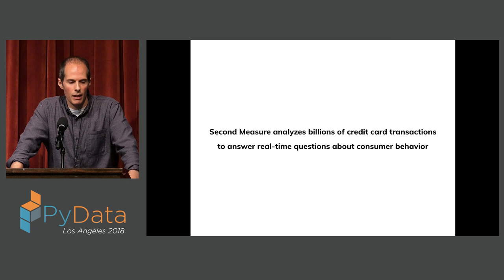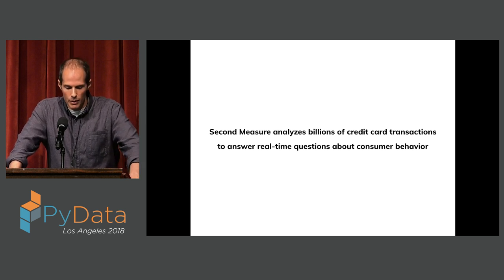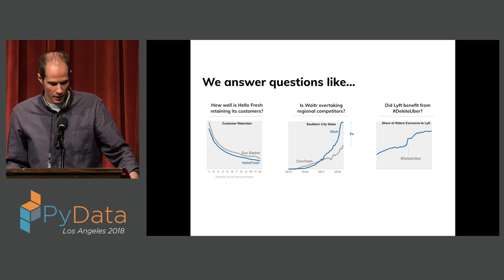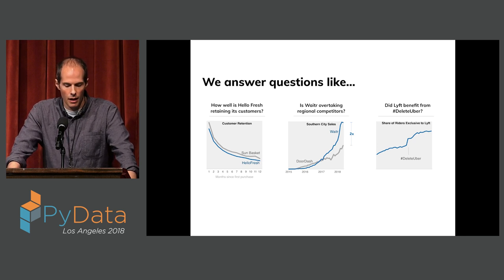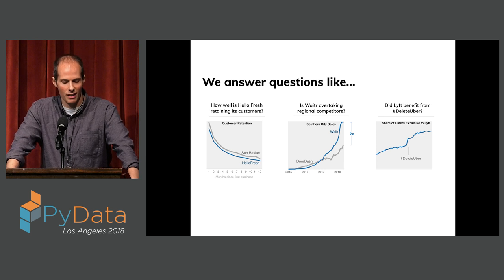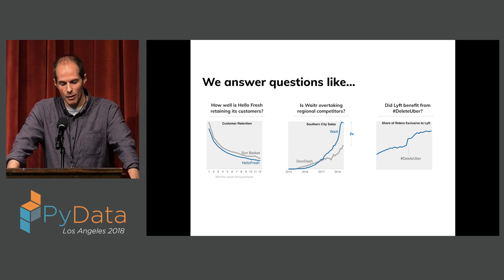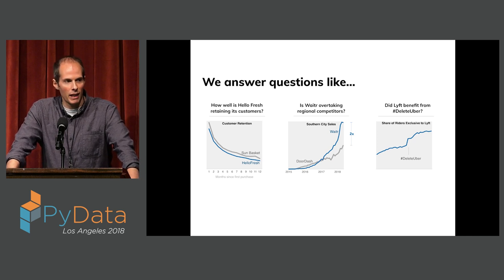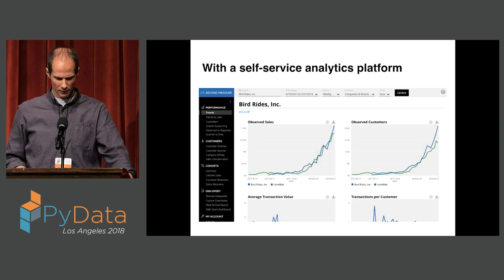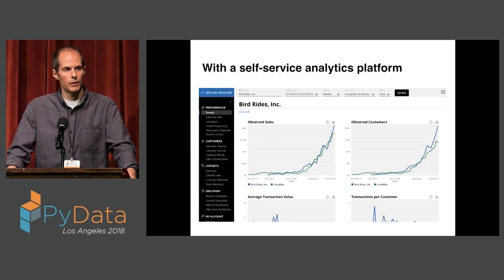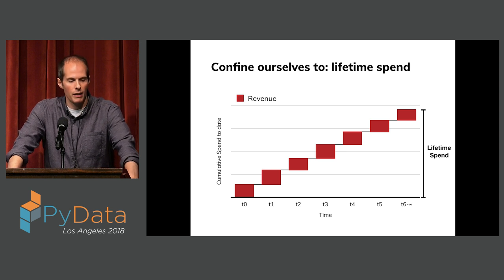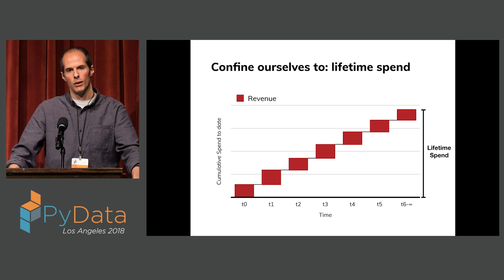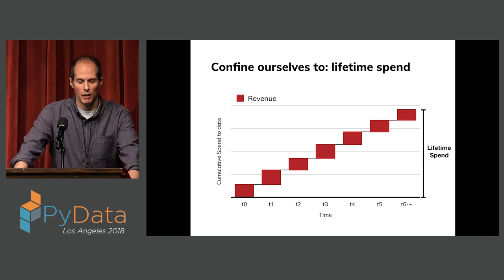I work at a company called Second Measure. I lead the data team there, and what we do is analyze billions of credit card transactions to answer real-time questions about consumer behavior. Some examples of analysis we've done: retention in the meal kit industry, regional variation in food delivery with a company called Waiter, and analyzing the impact of Delete Uber on market share at Lyft and Uber. We deliver this through a self-service analytics platform. Because we're analyzing credit card transaction data, we'll simply look at lifetime spend and ignore the cost side of the equation.